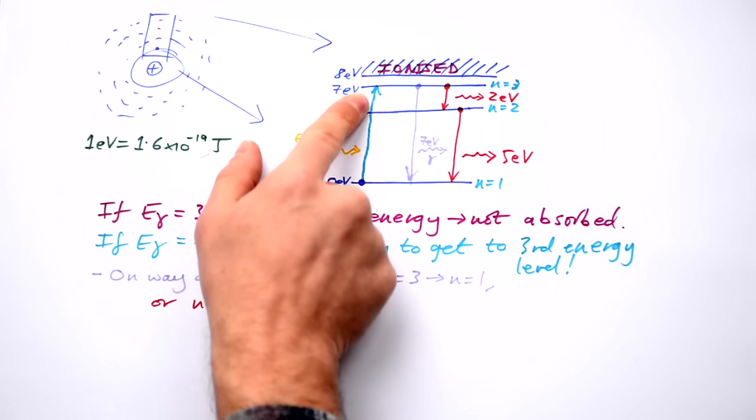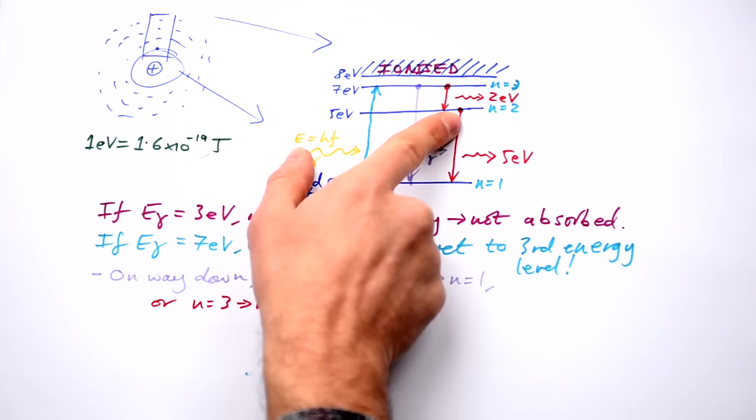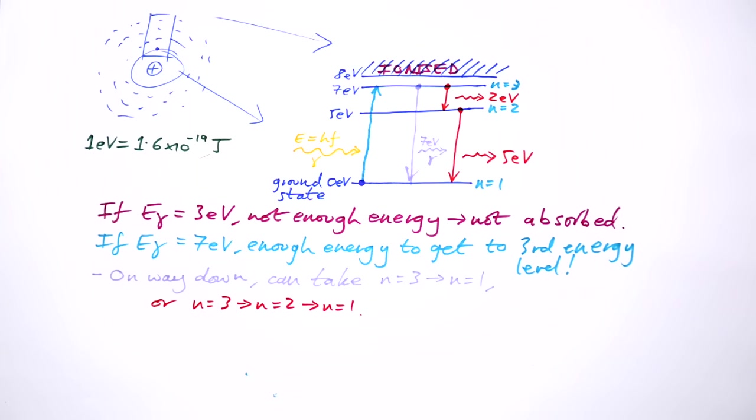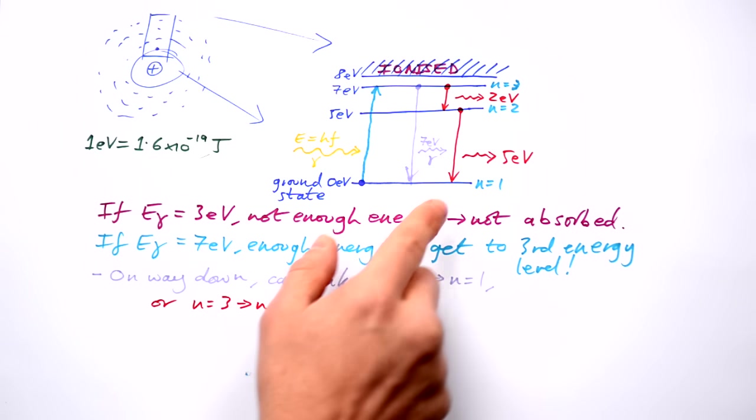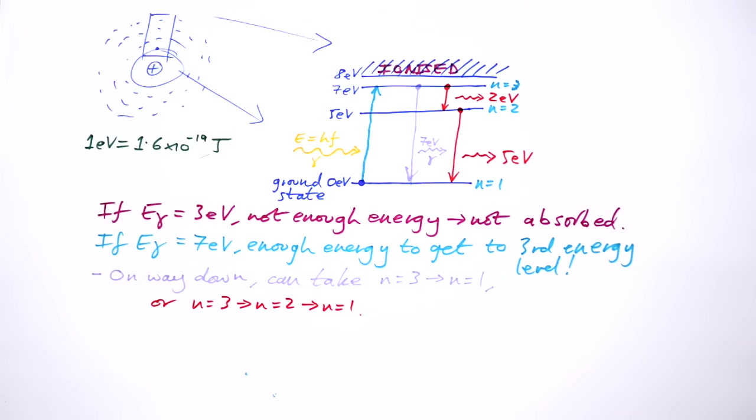Even though we're absorbing one photon here, one type of photon, how many photons can be emitted? One, two, three. So we're going to have various colors of photons and light being emitted when this electron goes from the third energy level down to its ground state.